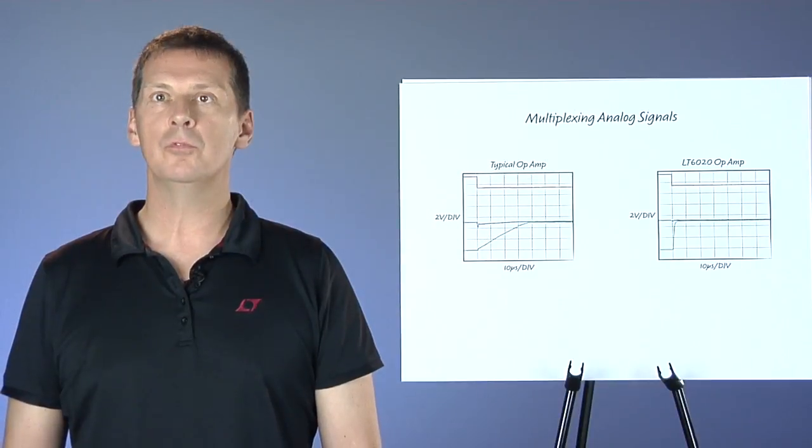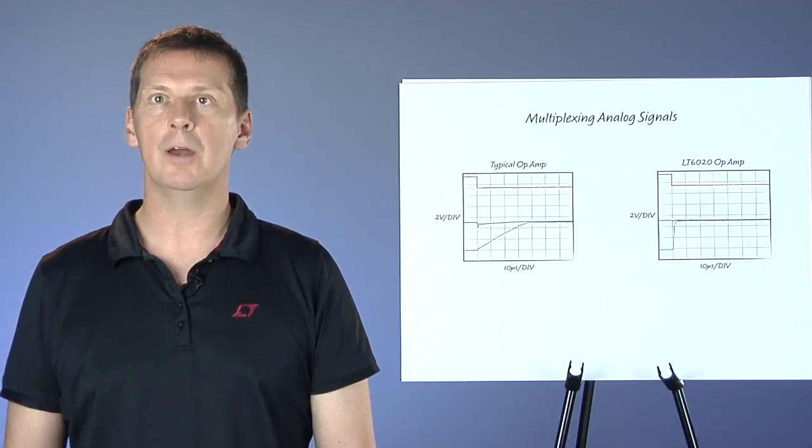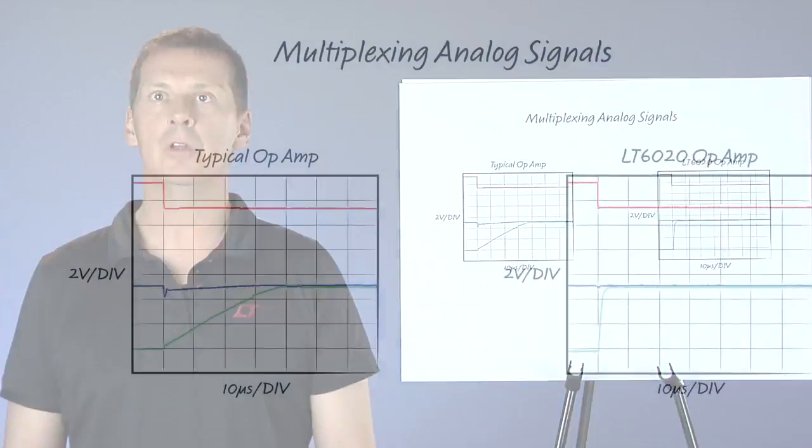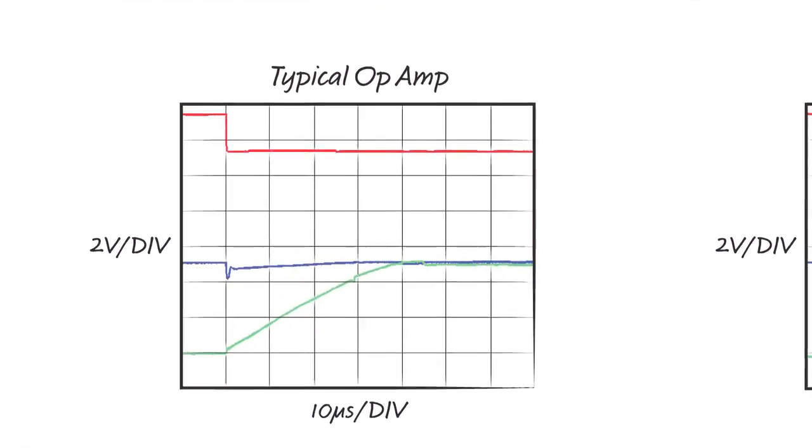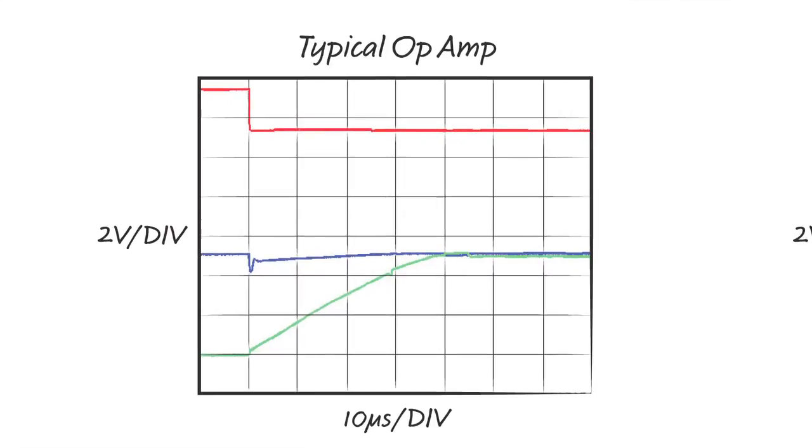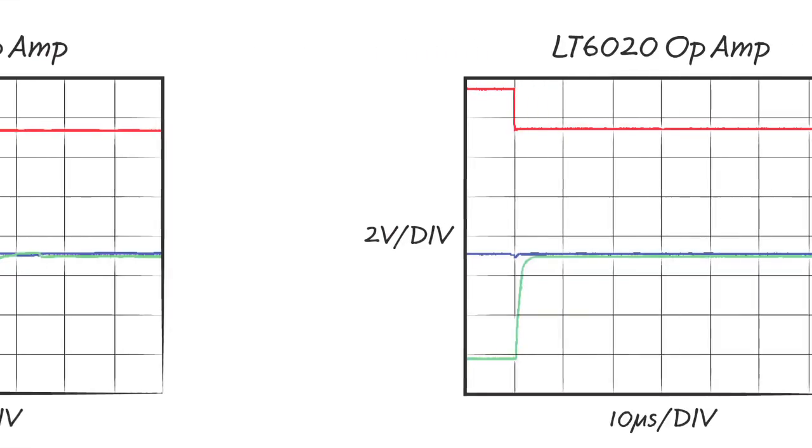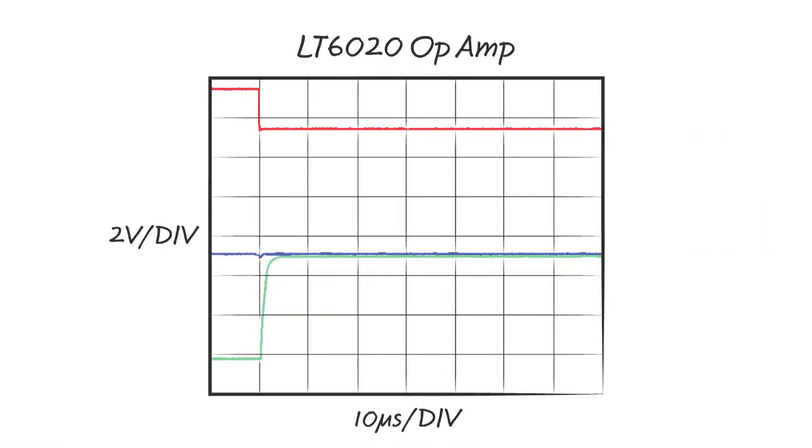The waveforms in this graph show the effect of these op-amp current spikes on our multiplexed circuit. With a conventional op-amp after the MUX, the input to the MUX get a significant voltage glitch, which persists as long as the output op-amp is slewing. With the LT6020 op-amp, not only does it slew faster, also the initial voltage glitch is much smaller. That is because no input protection diodes turn on.